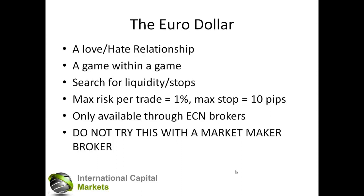How do you know the difference between the two? DMA or ECN brokers generally only charge commission. IC Markets — we're an ECN broker — we charge commission. If your broker is just giving you a spread to trade off, that's usually a pretty good indication that they're a market maker.